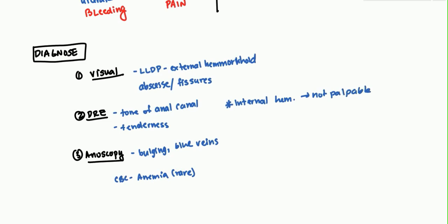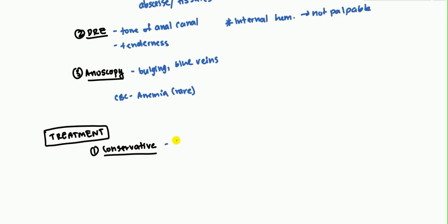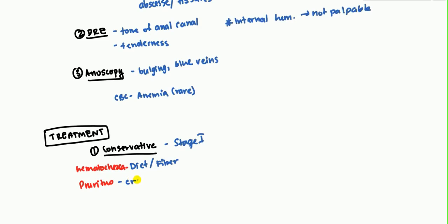The first line of treatment is conservative management, used for Grade 1 and possibly Grade 2. The first step is diet and fiber — fiber supplements and exercise can help symptoms significantly and have been shown to decrease hematochezia (blood in the feces). For pruritus, hydrocortisone cream is commonly given. Sitz baths are also helpful in alleviating symptomatic issues.